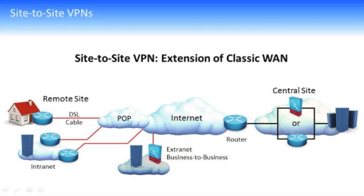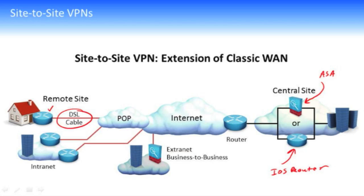Let's take a closer look at that site-to-site VPN. We have a central site that can use a variety of devices to initiate the site-to-site VPN: here's a Cisco Adaptive Security Appliance, and here's a Cisco IOS router — both of those devices could form the VPN with the remote site. The remote site has a router doing DSL or cable connection. Here we also have a partner that happens to have an Adaptive Security Appliance from Cisco. So the devices used for site-to-site VPN are very flexible.